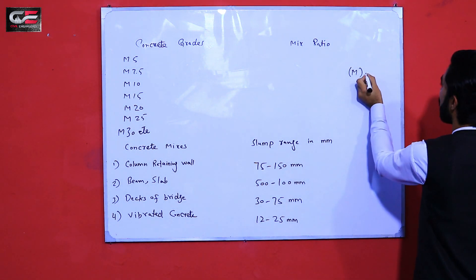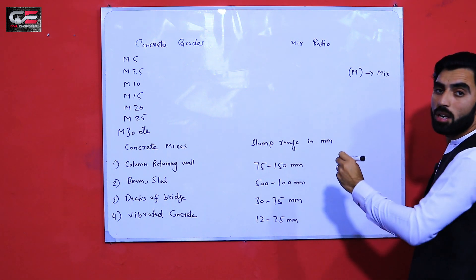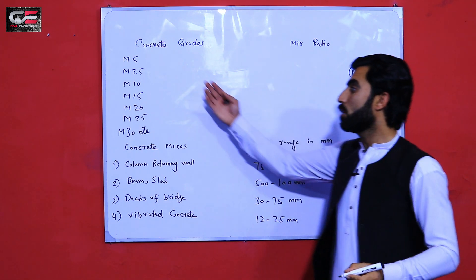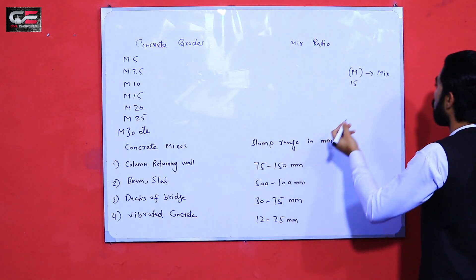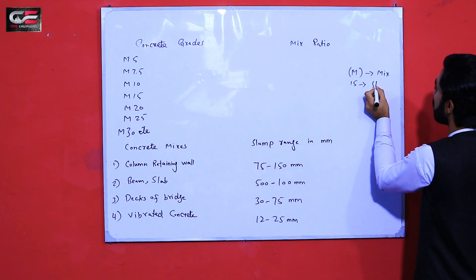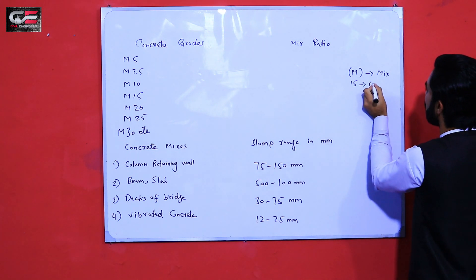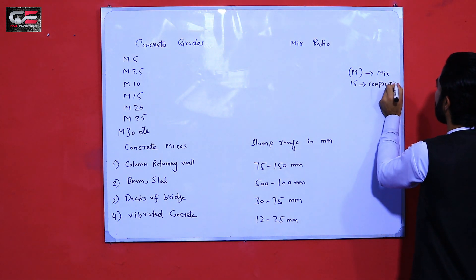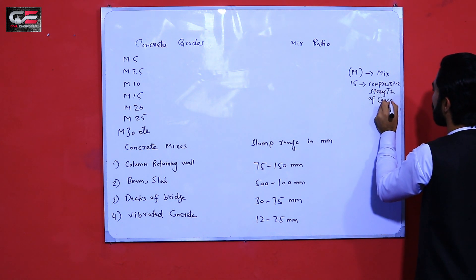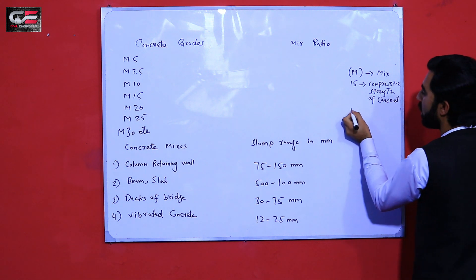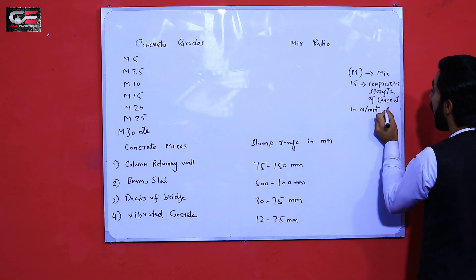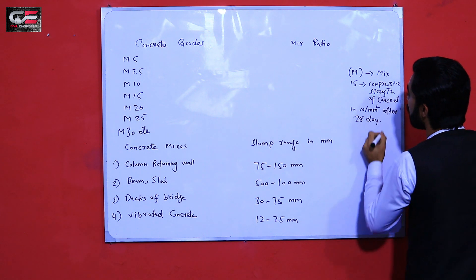Here is the question: what is 'M'? M stands for mix. And what is the number — for example 15, 7.5, 10, 20, 25? The number represents the characteristic compressive strength of concrete after 28 days, expressed in Newton per mm².